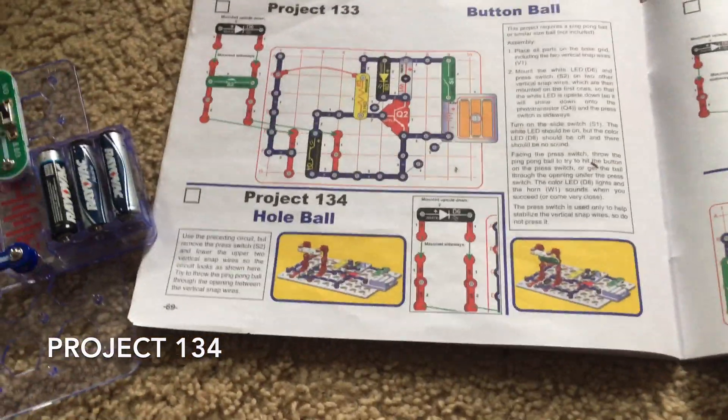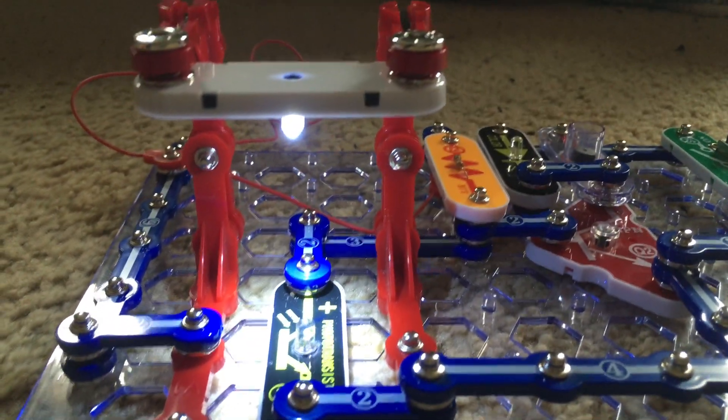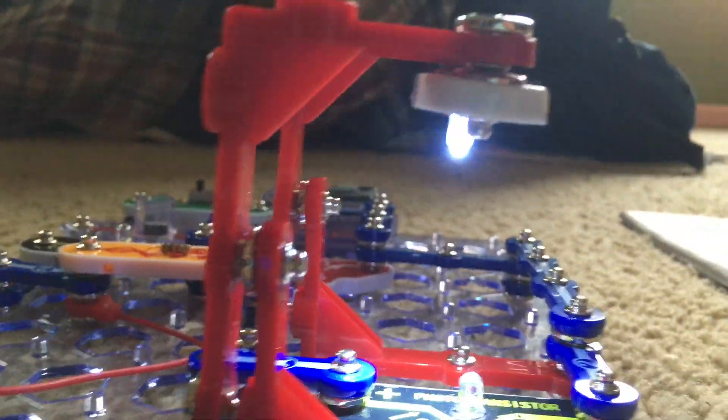134 hole ball. We'll modify the previous circuit by removing the press switch and sliding the two vertical snap wires holding the white LED downward.